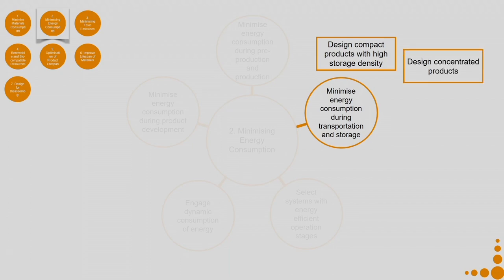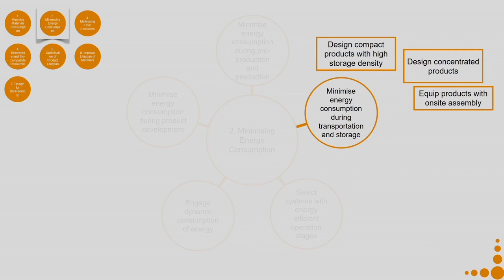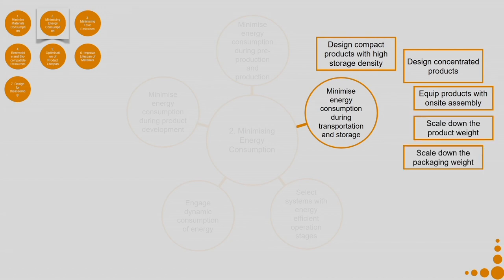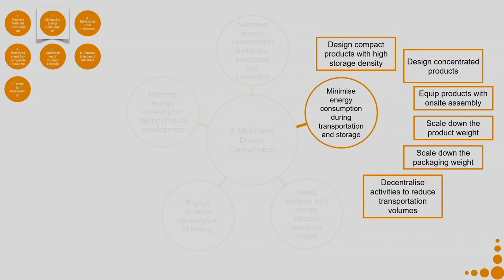Equip products with on-site assembly so that the volume of transportation reduces. Scale down the product weight as far as possible. Scale down the packaging weight as far as possible. Decentralize activities to reduce transportation volumes — for example, in a very big country, if a manufacturing unit is located in one extreme corner, there is huge transportation required. You can split the factory into two different locations to minimize transportation.